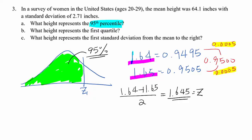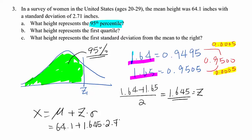Now we know the Z-score. Using the formula X equals mu plus Z times sigma, we calculate 64.1 plus 1.645 times 2.71, which gives us 68.558. That will be the answer.